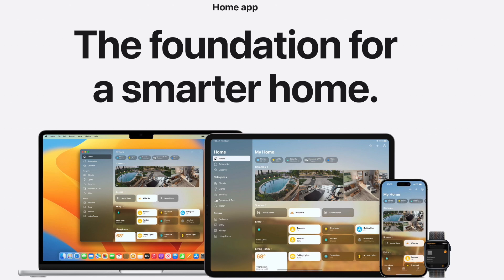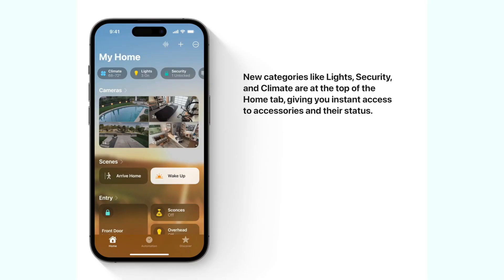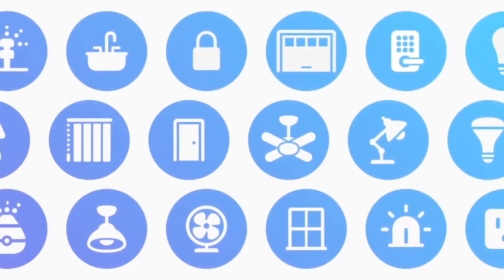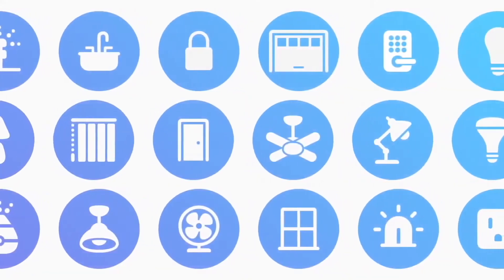Introducing Apple Home, formerly known as HomeKit. HomeKit is Apple's smart home platform that'll help you navigate all of your smart home devices in one place in one cohesive ecosystem. This is all possible on the Home app, which comes pre-installed with every single iPhone that ships. The Home app allows you to control all of your different devices from any different manufacturer, all in one place.